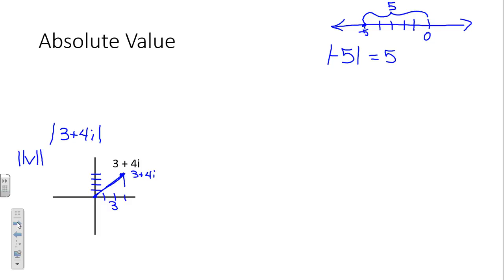We want the distance from 0 to 3 plus 4i, like the vector, right? If I'm looking for the absolute value of 3 plus 4i, and I want this length, what are you going to do? Yeah, square 3, square 4, take the square root. We're at 4 in the i direction, 3 in the x direction, 4 in the i direction. So, we would take the square root of 3 squared plus 4 squared, and 9 plus 16 is, so the square root of 25 is 5. That's the absolute value of 3 plus 4i.